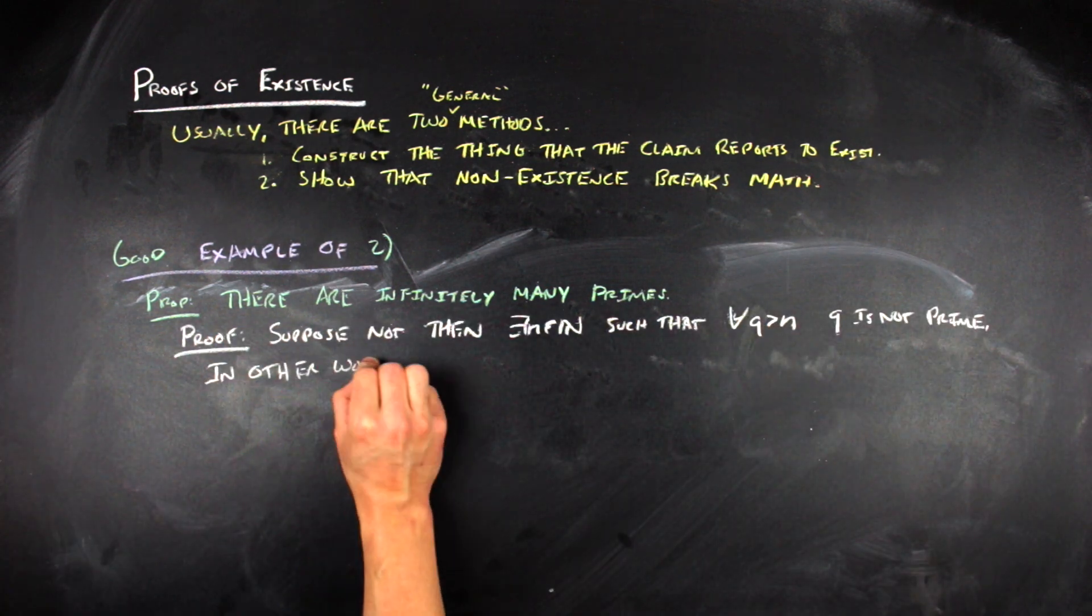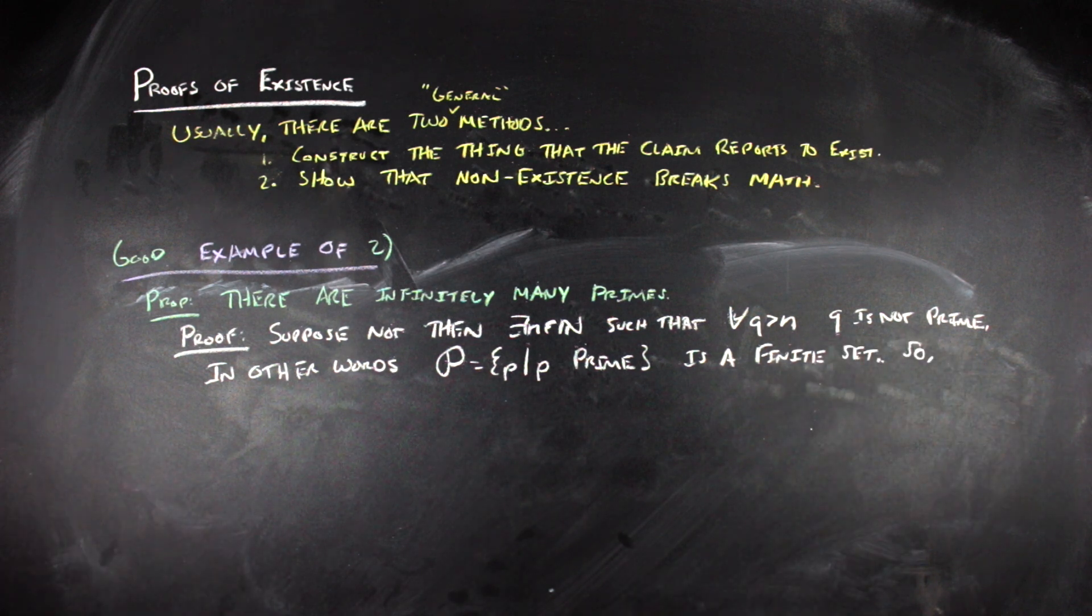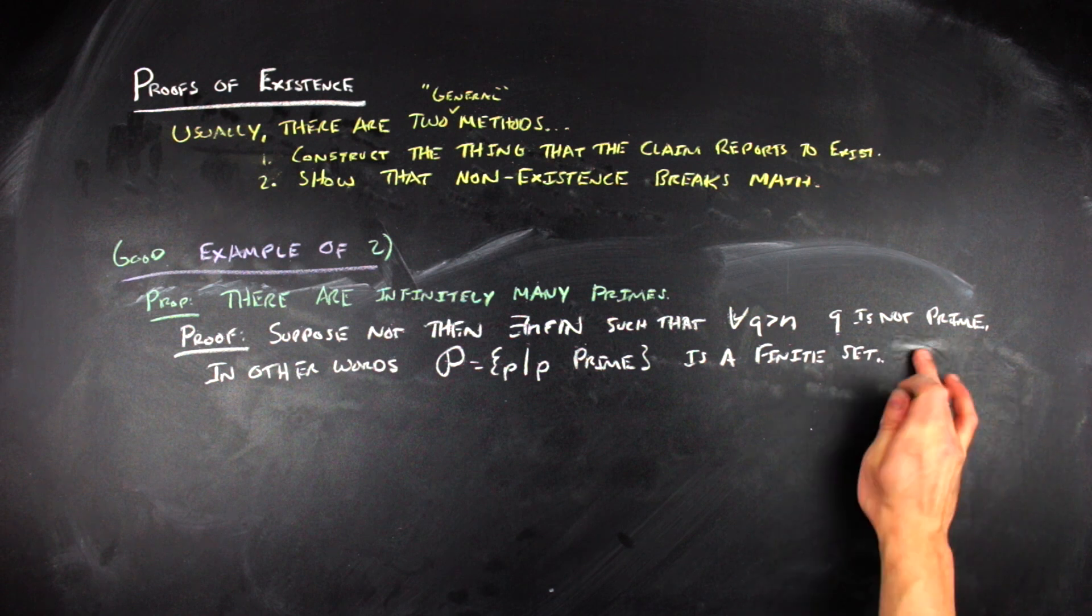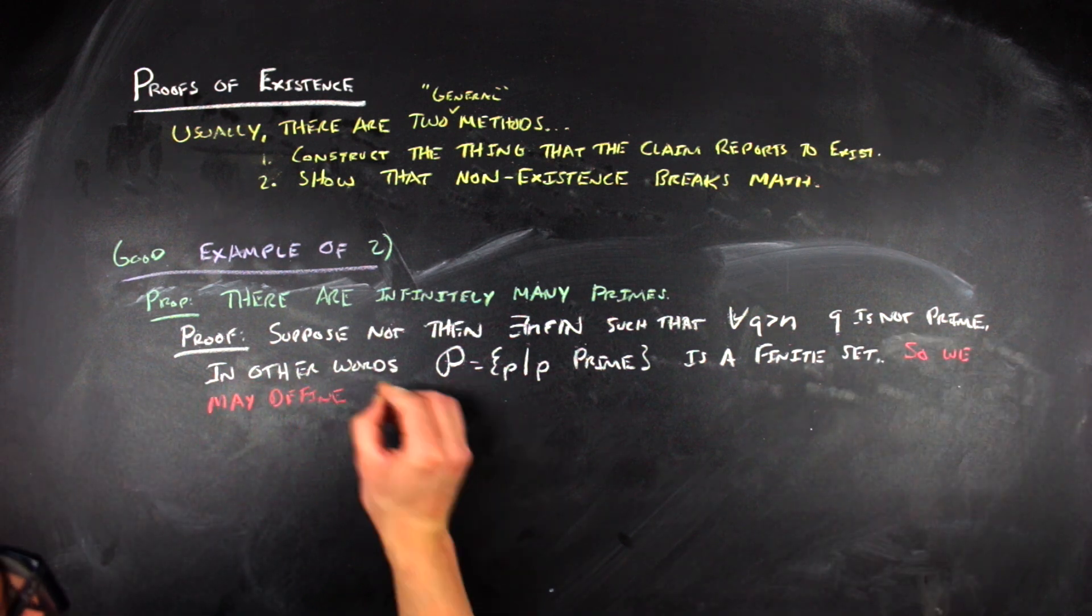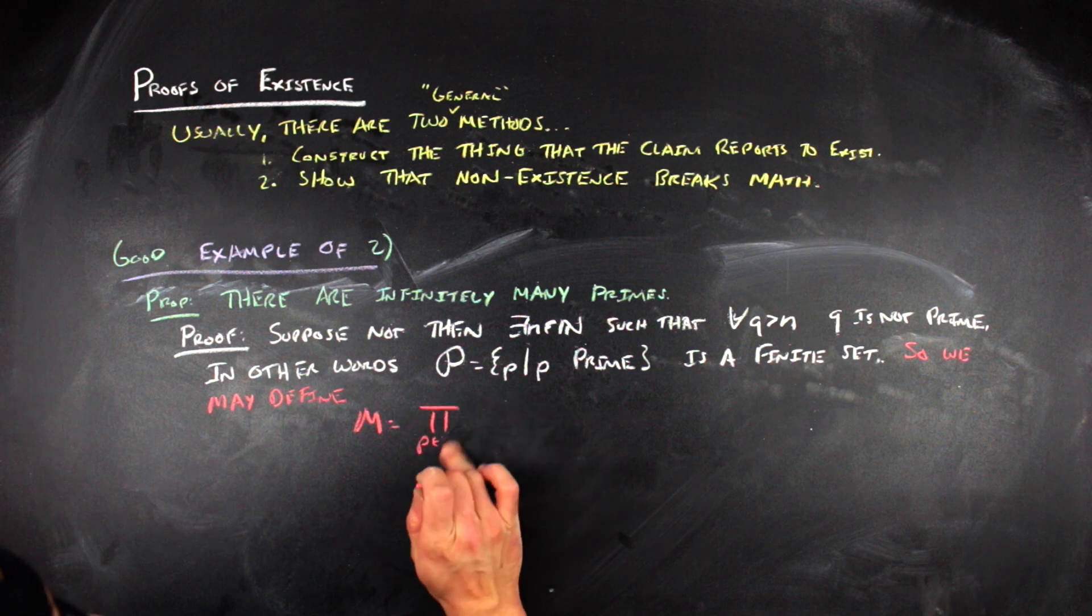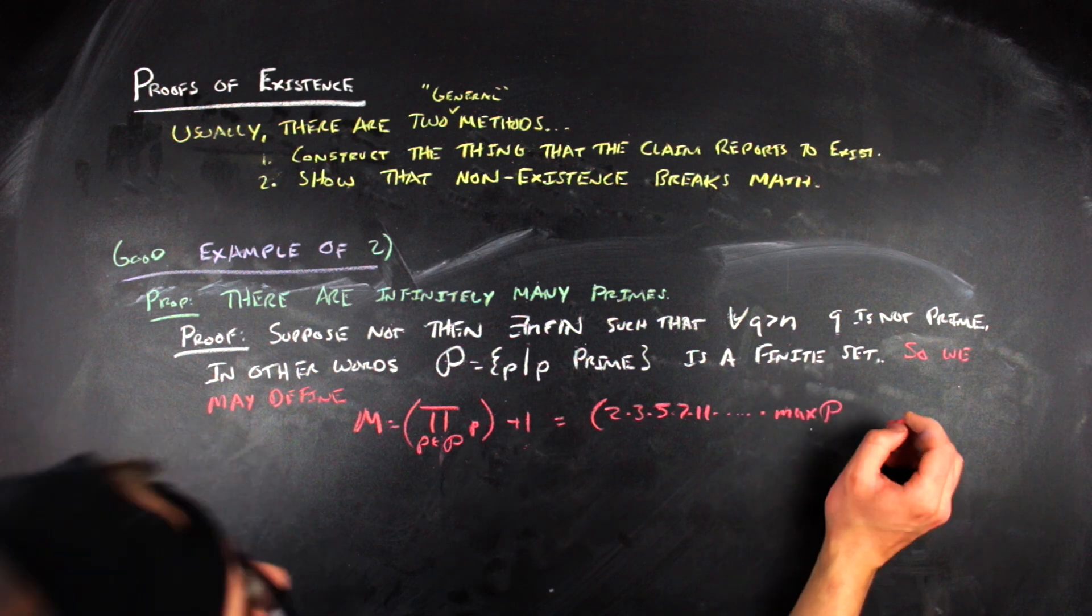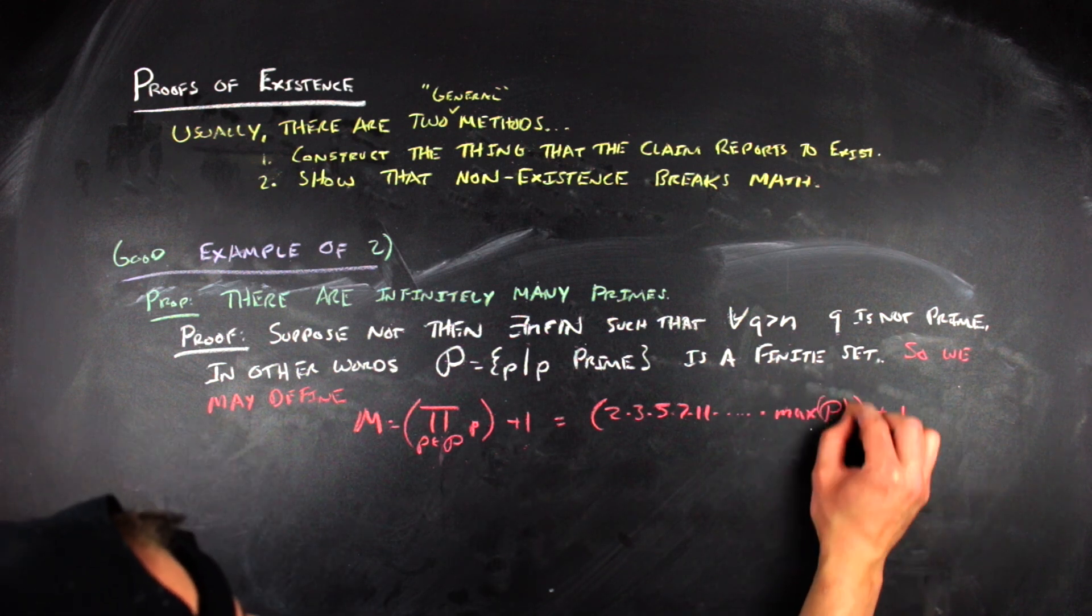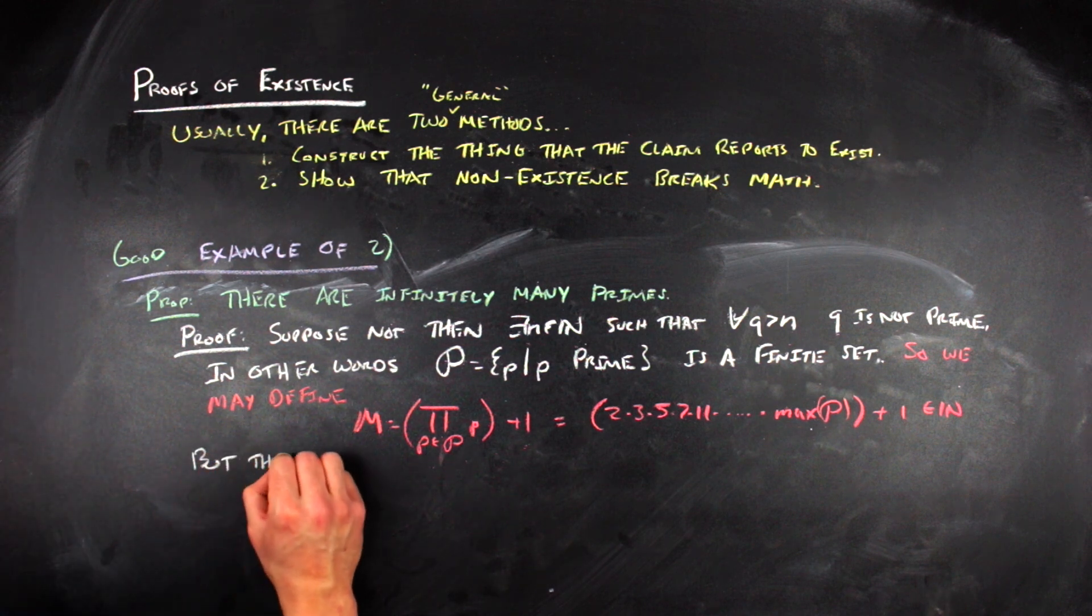Now, if you go ahead and suppose that there are finitely many of them, we can go ahead and define this new number big M, which we're going to say is going to be the product of all of the primes up to the maximum of the set of primes, which is going to be the largest prime because we suppose that the set of primes is finite. And then we're going to take that huge product and then we're going to add one.